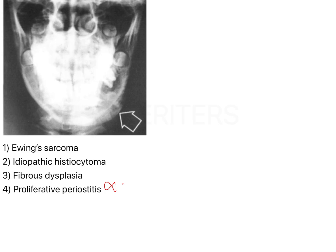Coming to fibrous dysplasia: first, it is more common in the maxillary posterior region than the mandibular region. Second, fibrous dysplasia occurs in much older patients, not in young patients like this. Third, fibrous dysplasia does not show a proliferative periosteal reaction — the fibrous tissue blends with and replaces bone, growing without periosteal reaction. So fibrous dysplasia can also be ruled out.